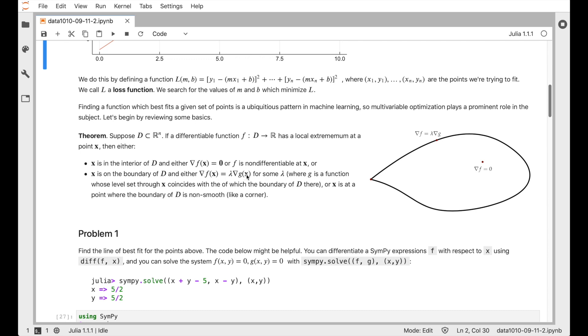So the proper generalization of that is the Lagrange equation, gradient f equals lambda gradient g, where g is some function such that the boundary of the domain is a level set of the function g. Alternatively, if there's a corner in the domain, that also has to be checked separately. That could be a local min or a local max, regardless of the Lagrange equation or the gradient equals zero equation.